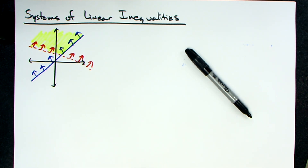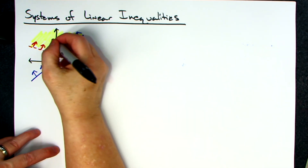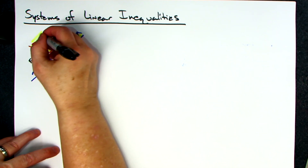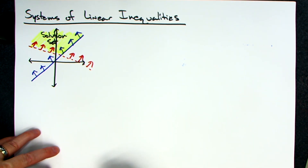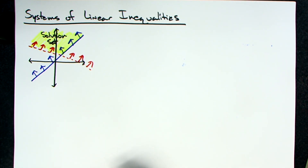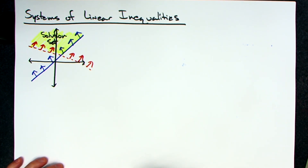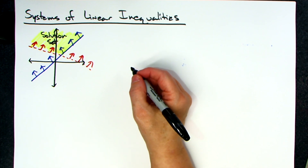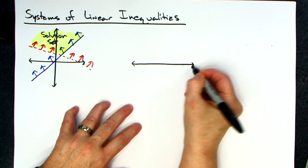On the graded homework — read the directions very carefully, and it'll be on the final exam and probably on test two as well — they want you to write the words 'solution set' in that area. The part that gets shaded twice: you literally write the words 'solution set.' In MyMathLab you're just going to use the paint bucket and click right in that region to shade it.